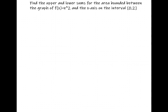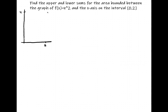We want to find the upper and lower sums for the area bounded between the graph of f(x) = x² and the x-axis on the interval 0 to 2. We're dealing with this portion of the parabola f(x) = x² on the interval 0 to 2, so it will go up to 4 on the y-axis. What we're trying to do is use Riemann sums to find this area.